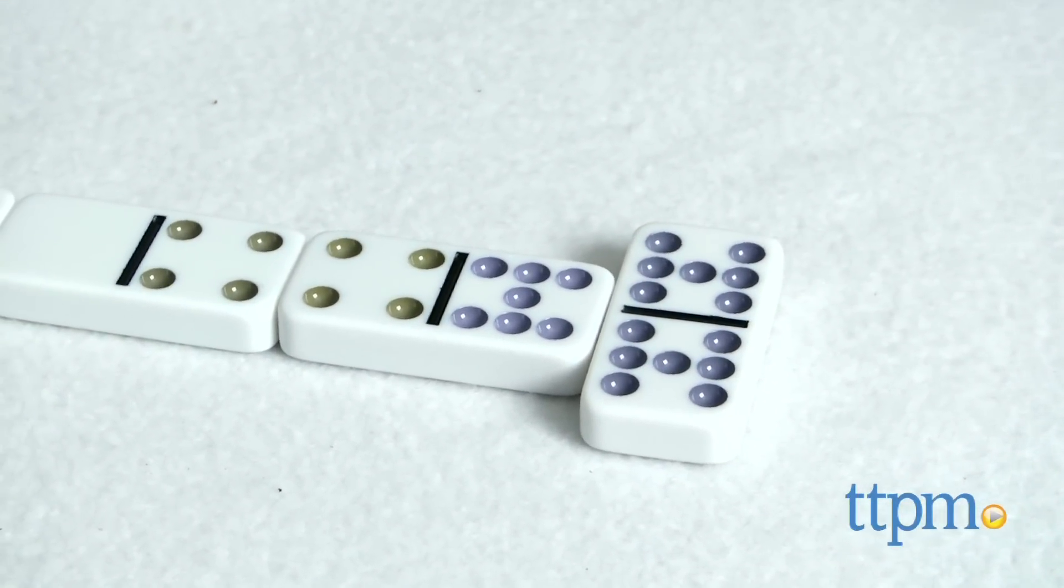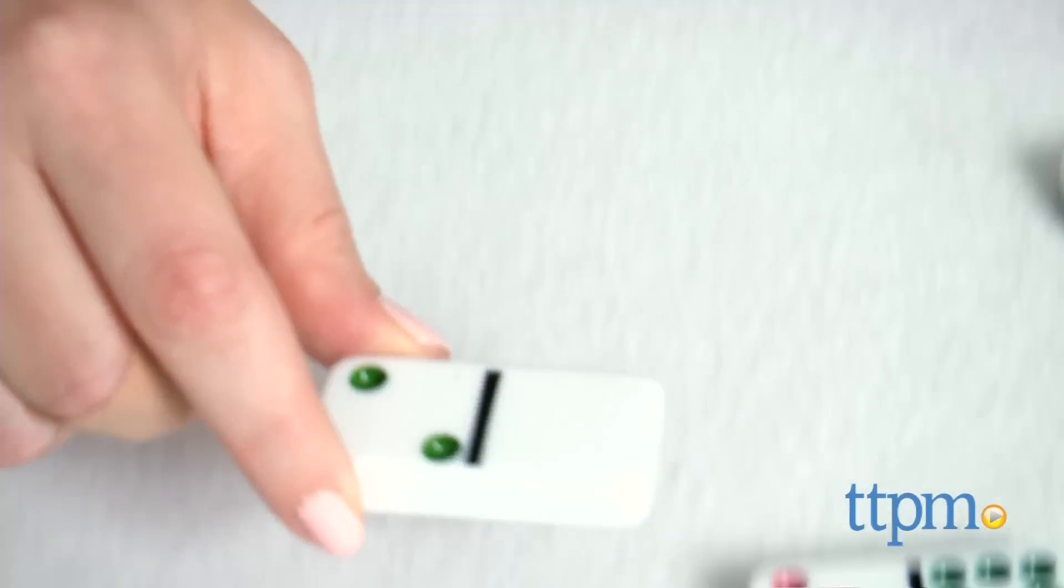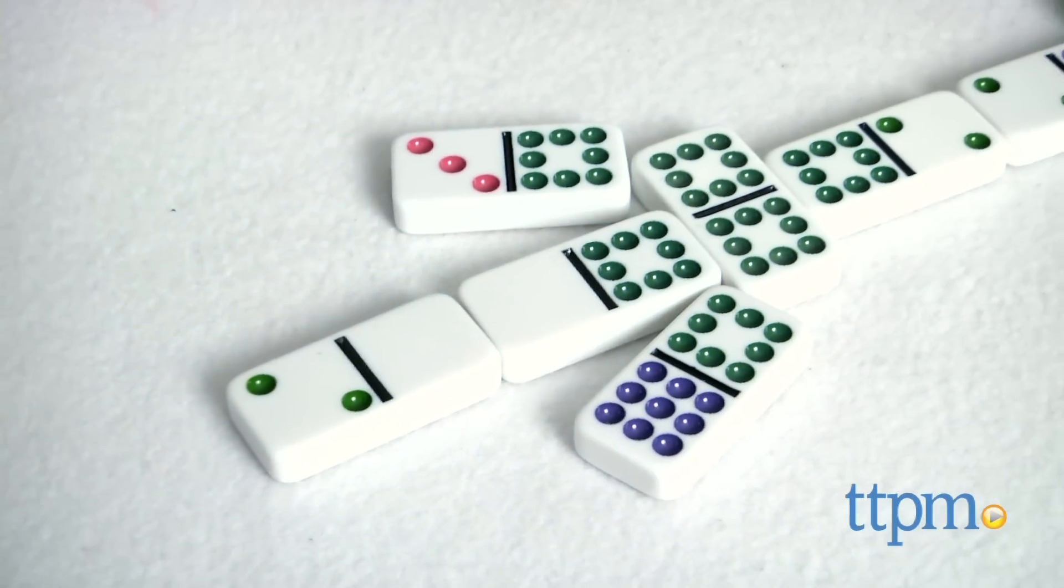The last round uses the double blank as the center domino. After all ten rounds, the player with the lowest grand total score wins.